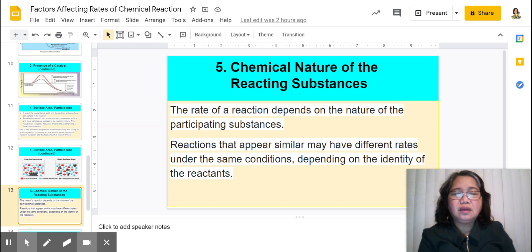And the fifth one which affects the rate of a reaction is chemical nature of the reacting substances. So the rate of reaction depends on the nature of the participating substances. Reactions that appear similar may have different rates under the same conditions, depending on the identity of the reactants.